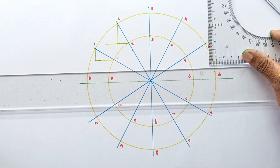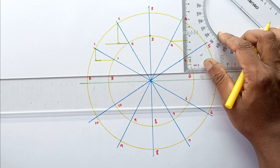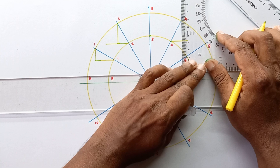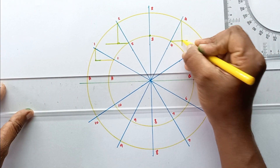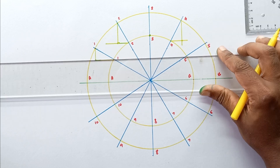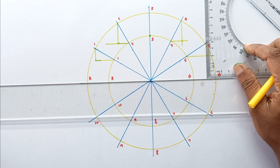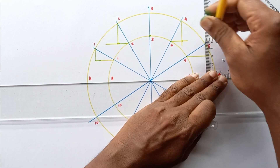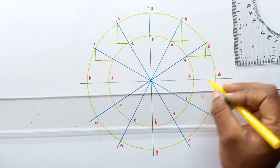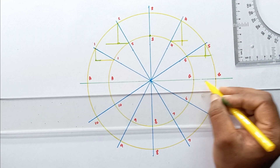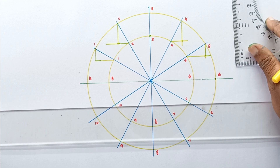Move to the 4th point and extend this line, then draw the vertical line. Then move to the 5th point, extend the line, then draw the vertical line again and take this point. You can see that at point B, both lines are intersecting at this point — mark this point.